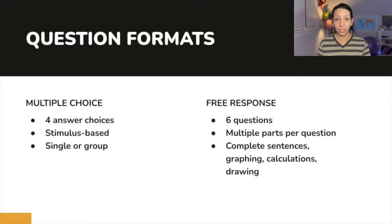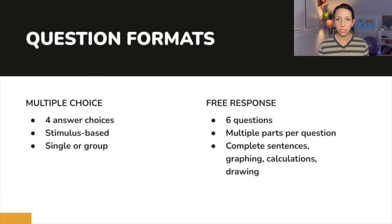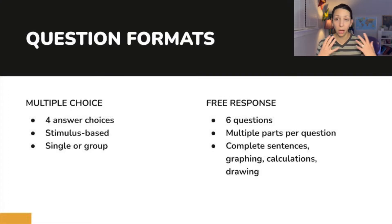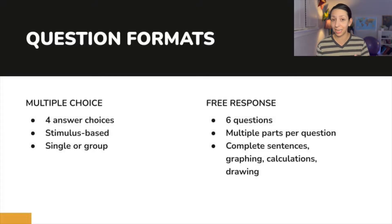On the AP Bio exam the questions are very standardized, meaning some things are always the same no matter which year you're taking the test. There are two parts: the multiple choice questions and the free response questions. On the multiple choice questions there will always be four answer choices — A, B, C, and D — and most of the time they're stimulus-based, meaning there is a model, a phenomenon explanation, experimental data, a graph, or a table that you'll have to look at to answer the question.